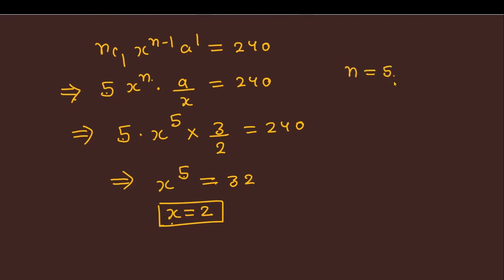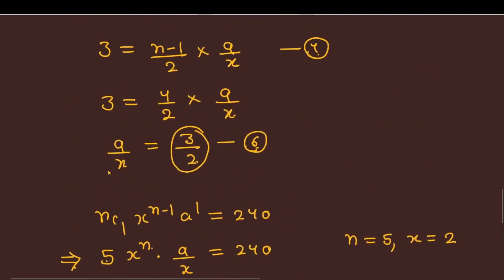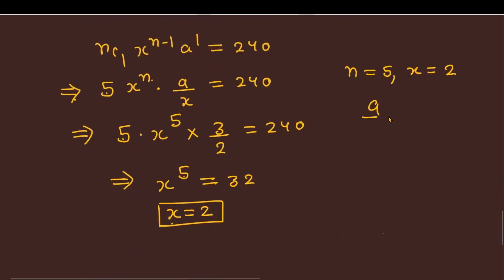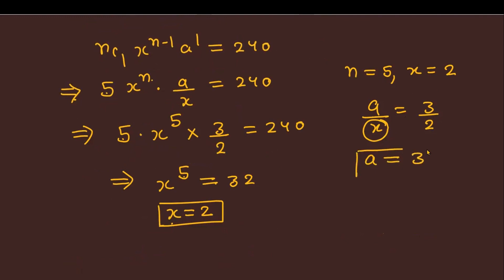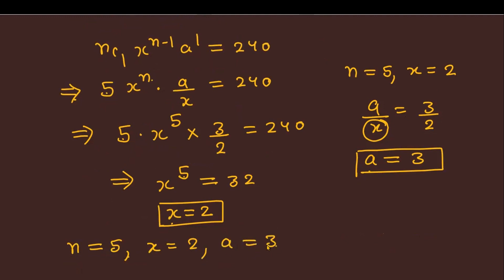With x = 2 and a/x = 3/2, we get a = (3/2) * 2 = 3. Final answers: n = 5, x = 2, and a = 3.